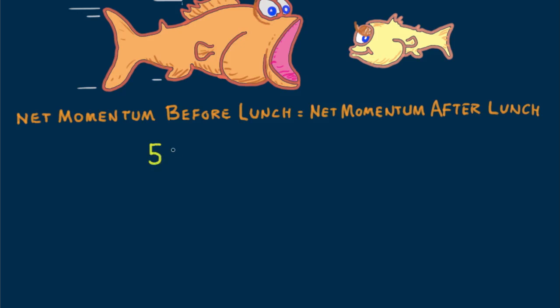Following the physics, the initial momentum of the large fish is 5 kilograms times 1 meter per second. Add this to the initial momentum of the small fish, which is zero. After lunch, the net momentum is the combined mass times V, what we're looking for.